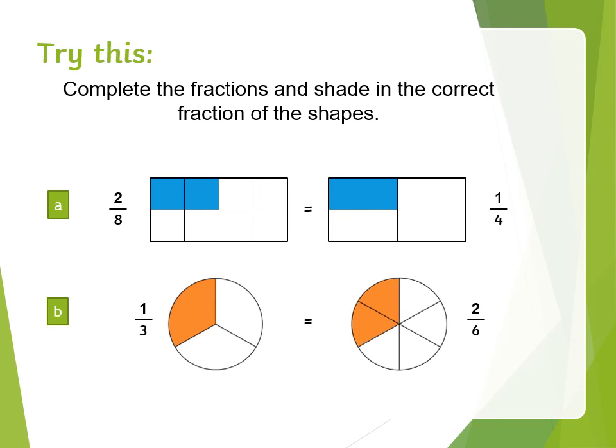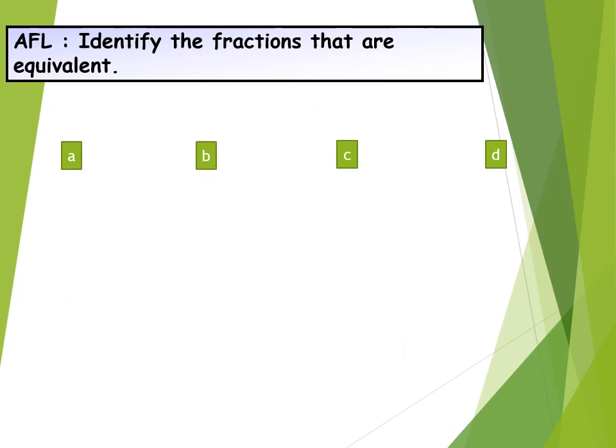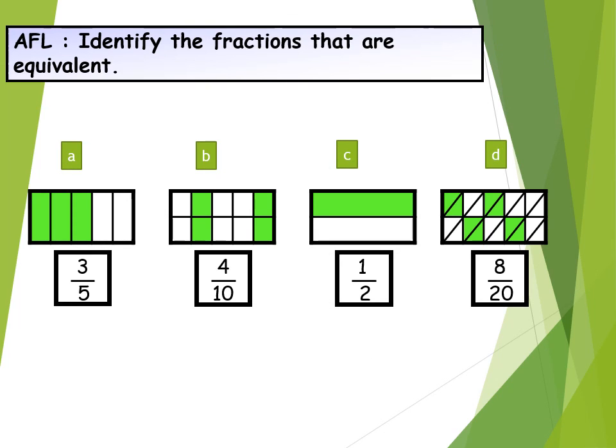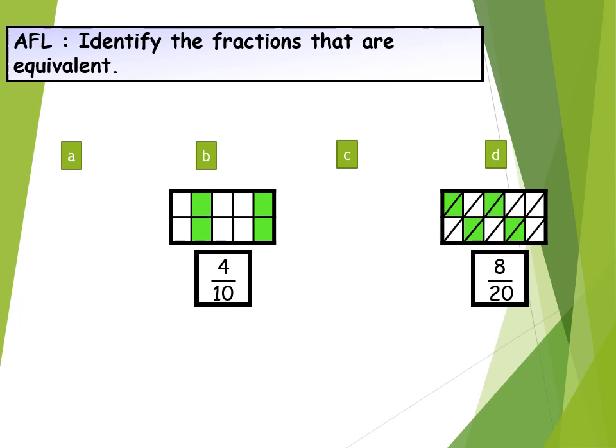So in first figure two out of eight is equivalent to one out of four and the second one, one out of three equal to two out of six. Now identify the fractions that are equivalent. So look carefully at the shaded part and try to find the equivalent fraction. Yes the answer is b and d.